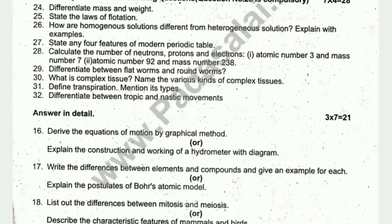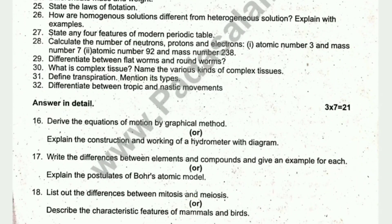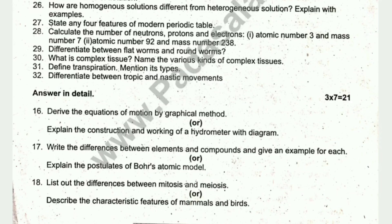Section 21 has three questions with choice — either question 16, 17, or 18. Question 16 Physics: Derive equations of motion by graphical method, or explain the construction and working of a hydrometer with a diagram. Question 17 Chemistry: Find the differences between elements and compounds with examples, or explain the postulates of Bohr's Atomic Model. Question 18 Biology: List the differences between mitosis and meiosis, or describe the characteristic features of mammals and birds.